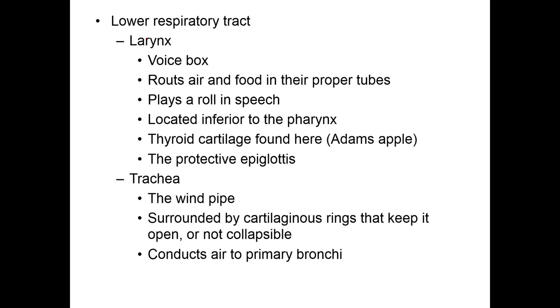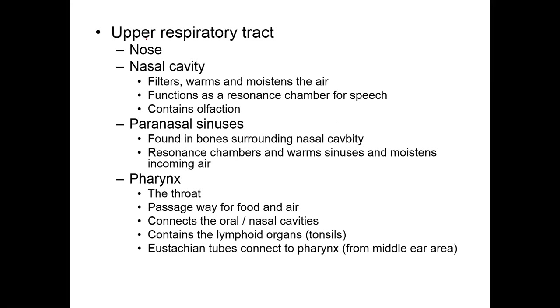The upper respiratory tract includes the nose, nasal cavity, paranasal sinuses, and the pharynx. You can draw a line around the area of your throat — everything above that is the upper respiratory tract and everything below that line is the lower respiratory tract.